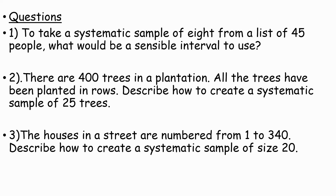To take a systematic sample of 8 from a list of 45 pupils, what would be a sensible interval to use? A systematic sample is one where all of the members are equally far apart. A sensible interval would be 45 over 8, which is approximately 5 — it's 5 and five-eighths, which rounds down to approximately 5. So we could have an interval of 5.